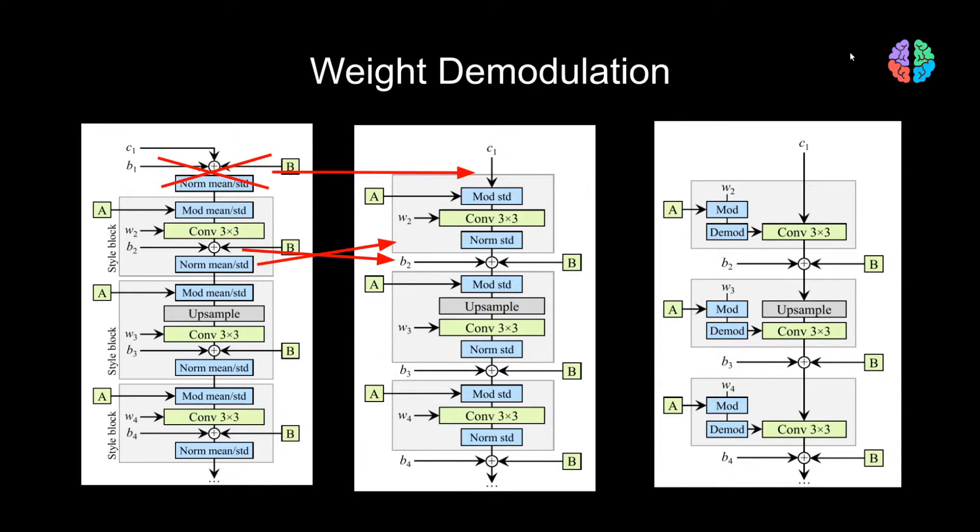With this style block as a starting point, the paper argues that the modulation layer simply acts as a scaling layer which multiplies the input with S, and the normalization layer as the layer which divides the output of convolution with the standard deviation sigma.